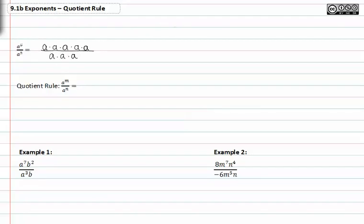As you know, if we divide out common factors, there are three sets of common factors that reduce out or divide out, and we're left with a to the second.